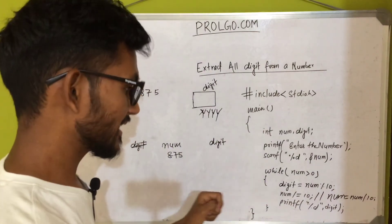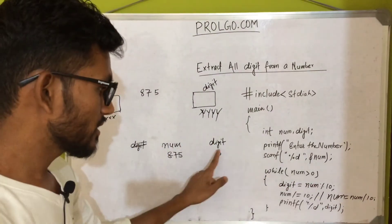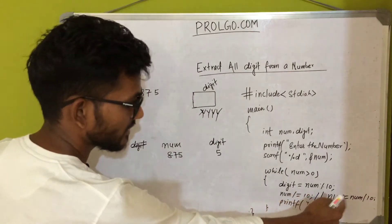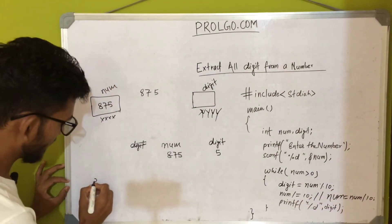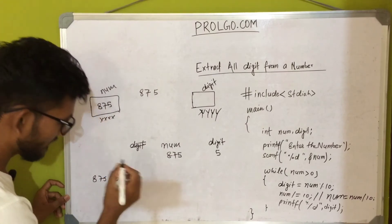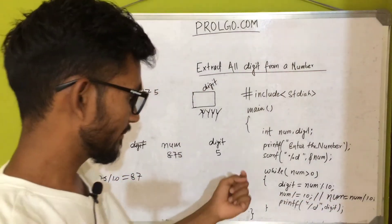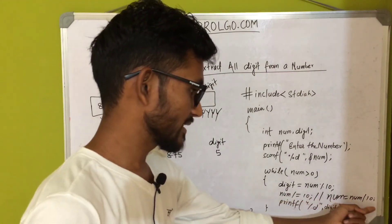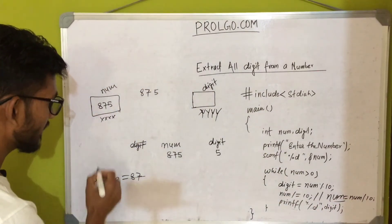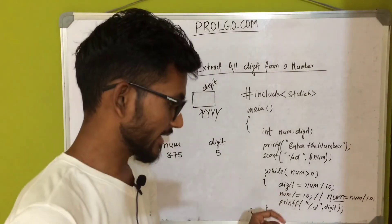Inside the loop: digit = num % 10. The number is 875 and we apply modulo 10, so we get the last digit, which is 5. Now we divide the same number by 10: 875 / 10 = 87. The value 87 is stored back into num. We then print digit, which outputs 5 on the console.